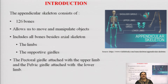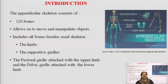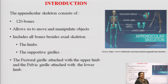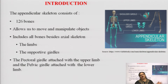The appendicular bones include all bones beside the axial bones, which were covered in our previous lecture. Starting with the limbs, we have the forelimbs, in the leg we have the hindlimbs, and then we have the supportive girdles.